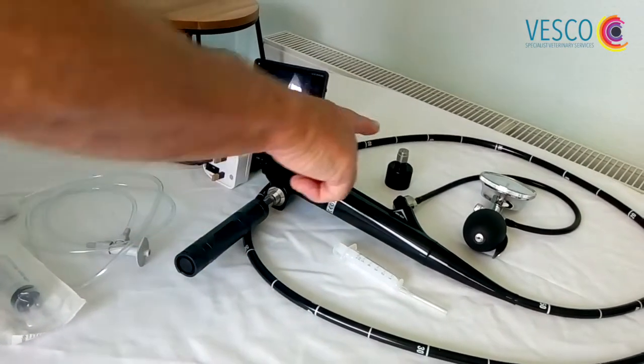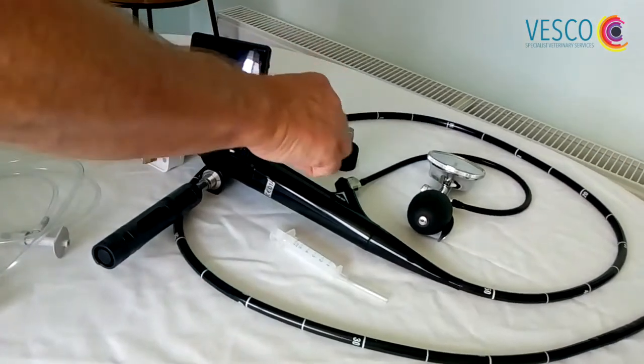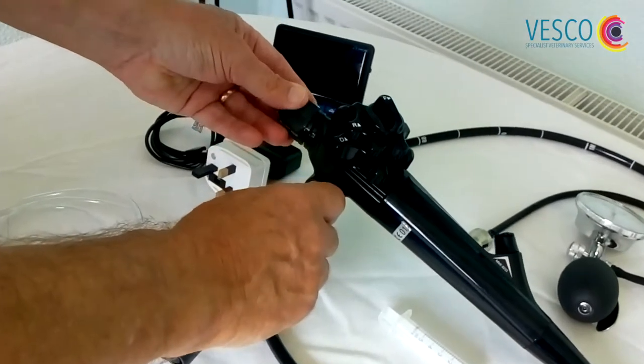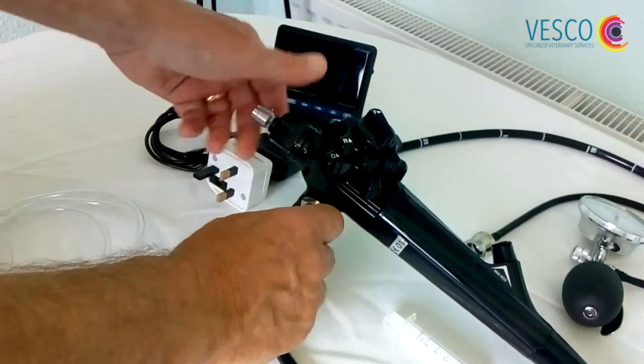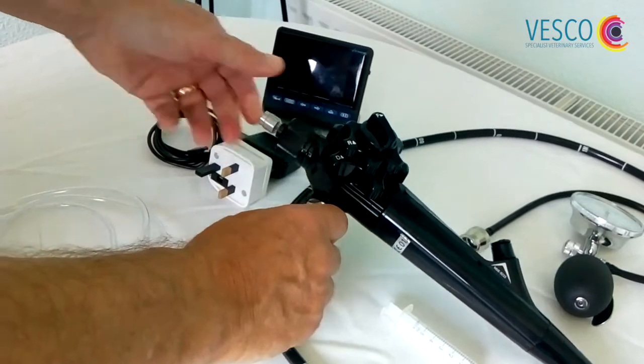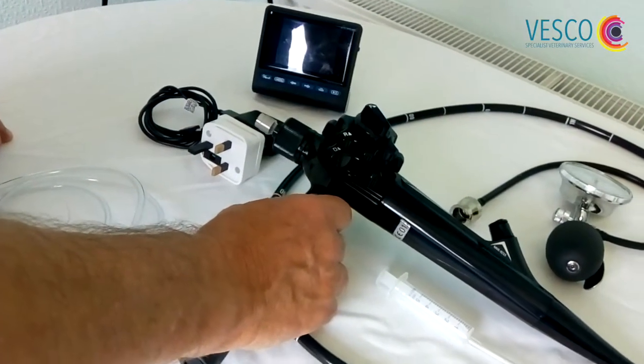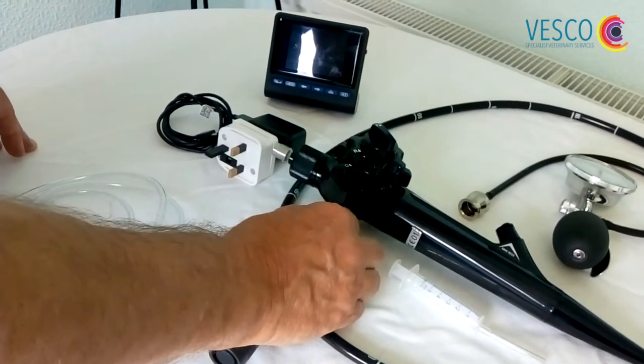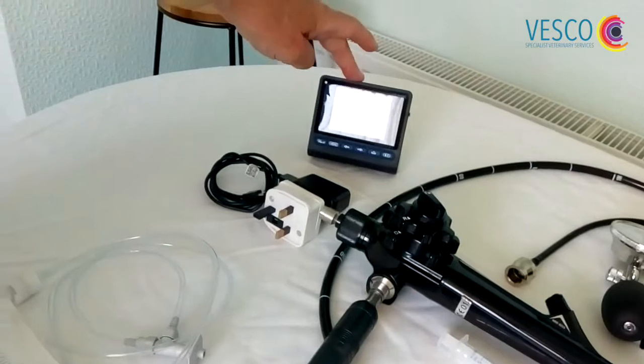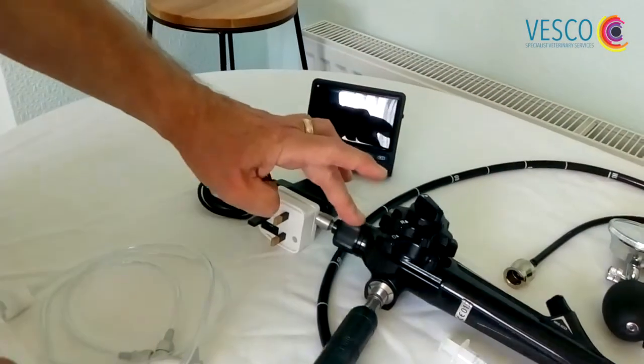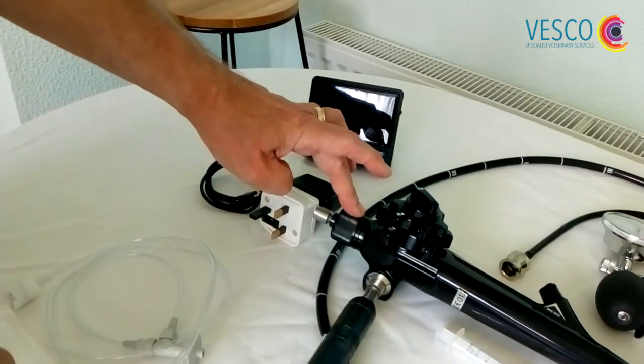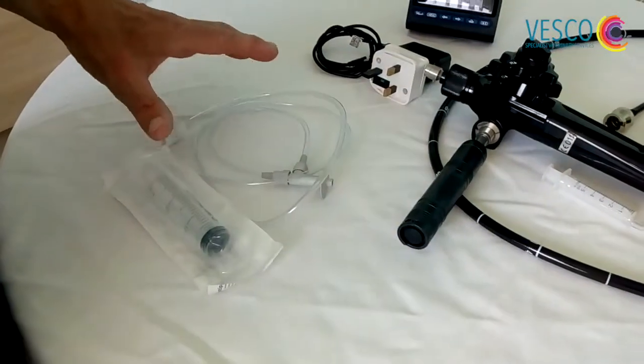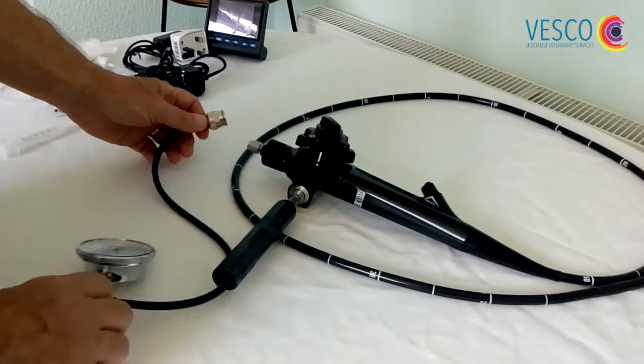We have the waterproof cap which screws onto here. This is for use in leak testing the scope prior to a procedure and also connecting to the scope post-procedure before we submerse it in any fluid. Here we have a small viewing screen which attaches to the end of the scope, and we have a cleaning kit here.